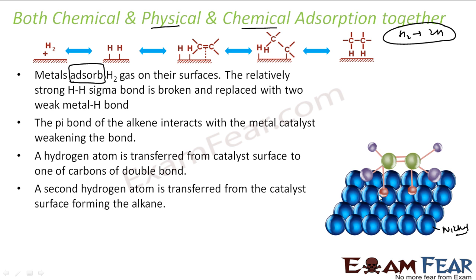In hydrogenation, the two hydrogen atoms attach to an alkene, converting it to an alkane. Another set of alkene comes, and the same thing happens: hydrogen gets adsorbed on nickel by physical adsorption, breaks apart by chemical adsorption, and the two hydrogen atoms are taken by the alkene to become alkane. This is how nickel acts as a catalyst — adsorption plays a critical role. The key point is that both physical and chemical adsorption can happen together.